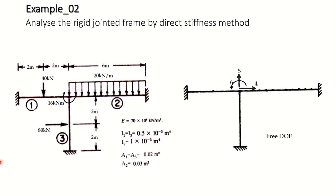This is one more problem on a frame and we are going to solve it by the direct stiffness method. The degree of kinematic indeterminacy for this frame is 1. If you look at this entire frame, this is the only joint which can have rotation or displacement, so that gives this frame a degree of kinematic indeterminacy of 1.